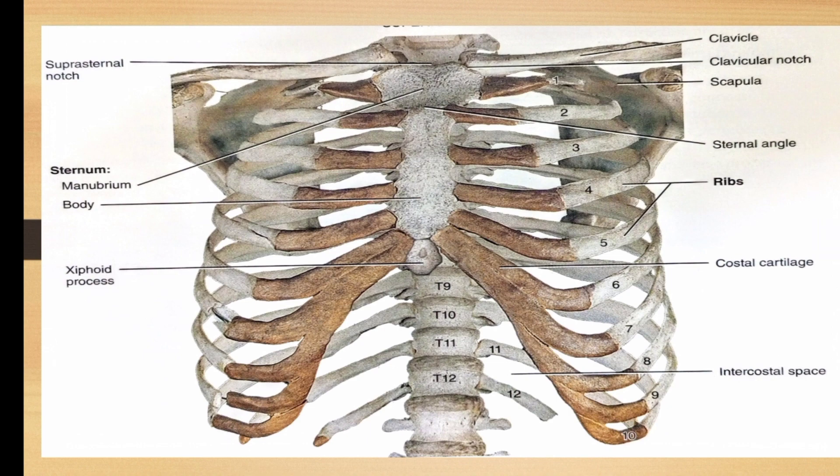The anterior part is attached to the 7 pairs of ribs. It is attached by a direct strip of hyaline cartilage. This is called the costal cartilage, which acts as a costal part connecting the ribs to the anterior attachment.